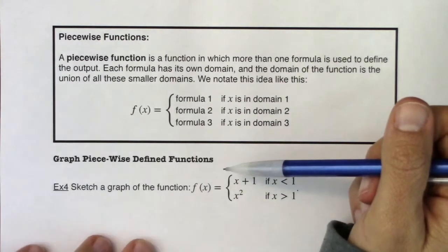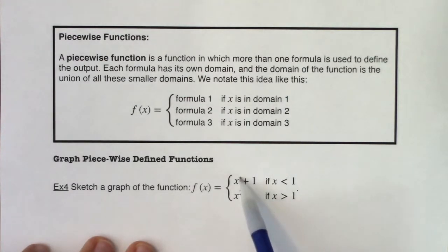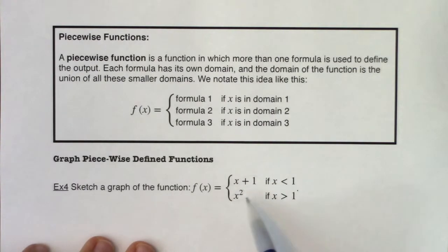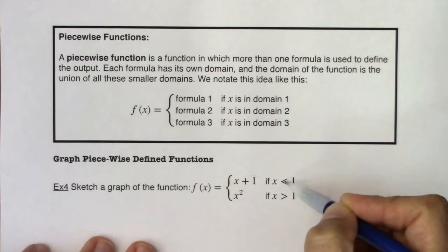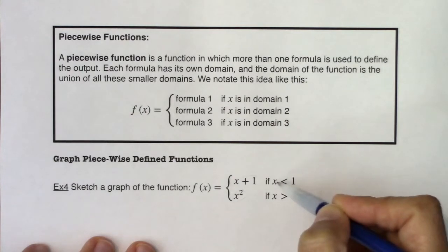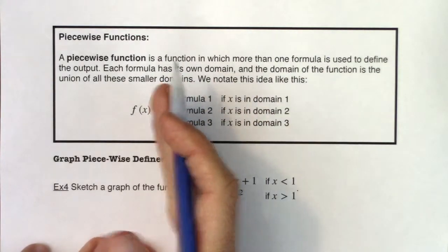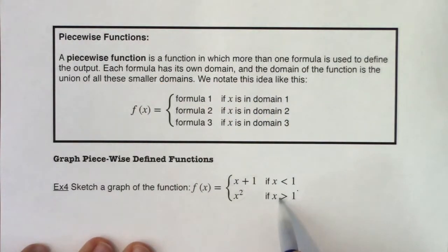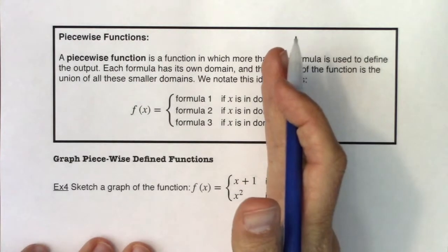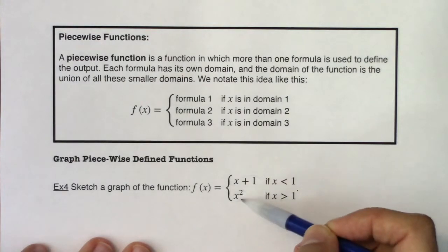With that, we're going to take a look at our first piecewise function. I want to sketch the graph of f(x) where I'm going to take a piece of the graph x plus 1 and a piece of the graph x squared. The breaking point — the domains are going to be x is less than 1 and x is greater than 1. So I want the left half of the line, because if x is less than 1 you're going to the left of 1, and the right half of the parabola.